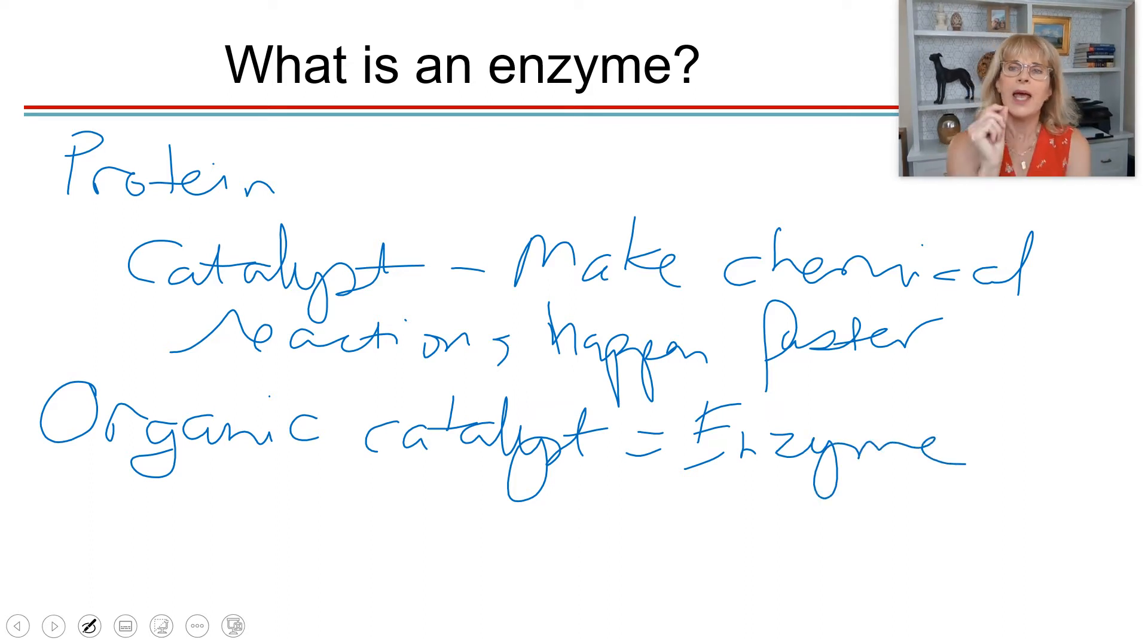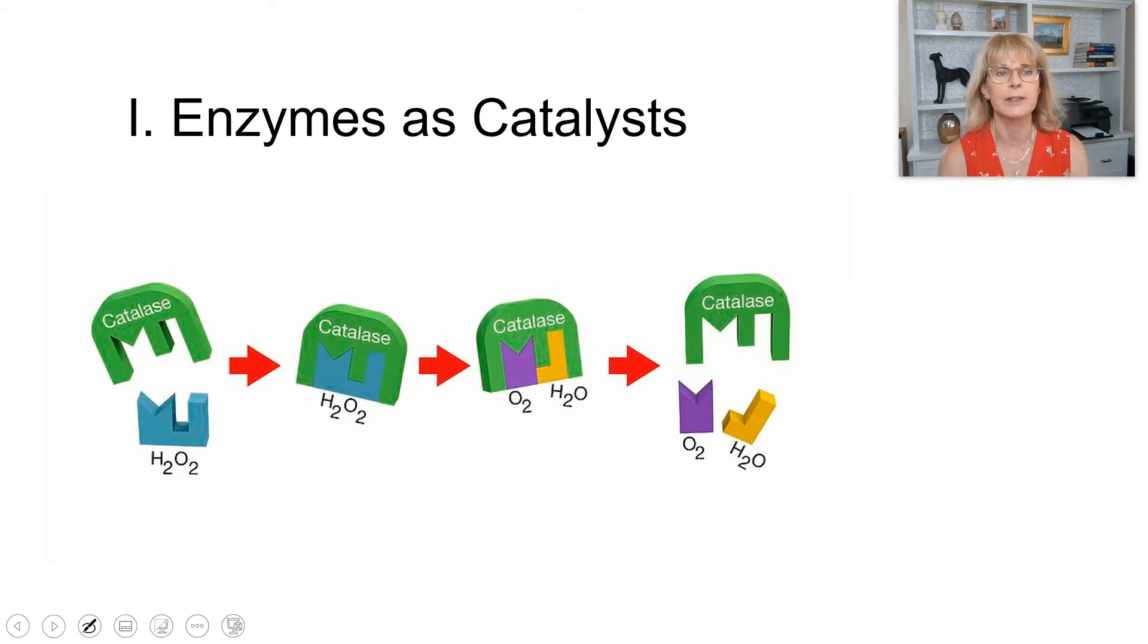So what is an enzyme? An enzyme is an organic catalyst. An enzyme is a substance that makes chemical reactions happen faster. Enzymes are almost always proteins. Now, enzymes do not make things happen that would not normally happen. It just makes them happen much more quickly.